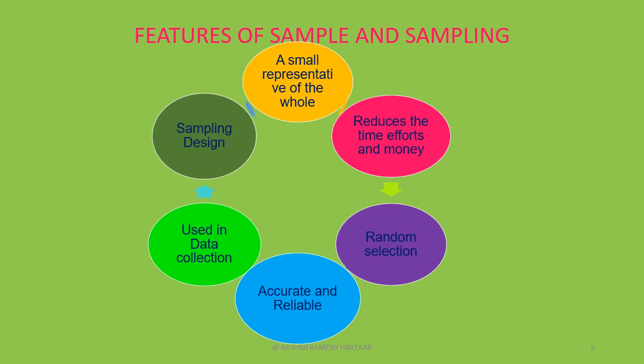It is, in fact, an effective alternative to census survey. Sampling is the only valid alternative when it would be impracticable for a researcher to survey the entire population. The sampling method provides reliable data promptly and economically. Sampling is a small representative of the whole.